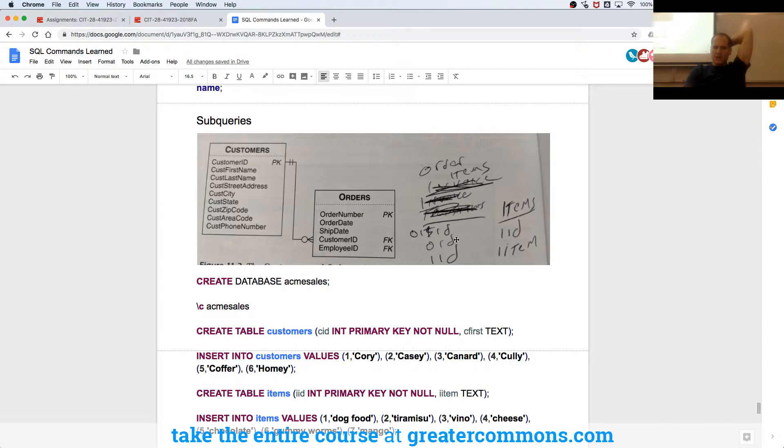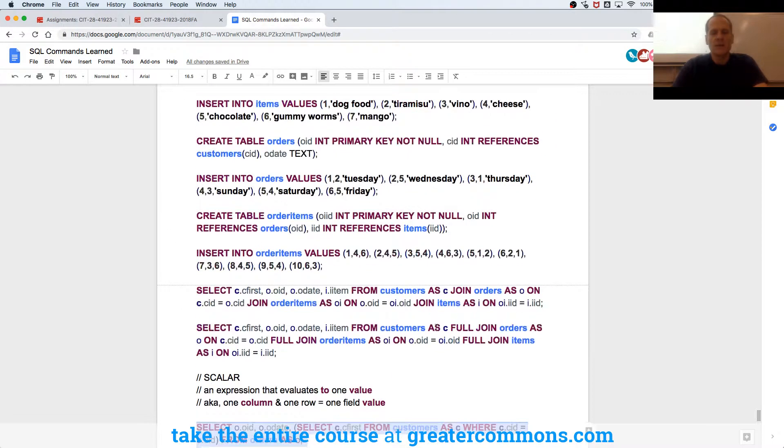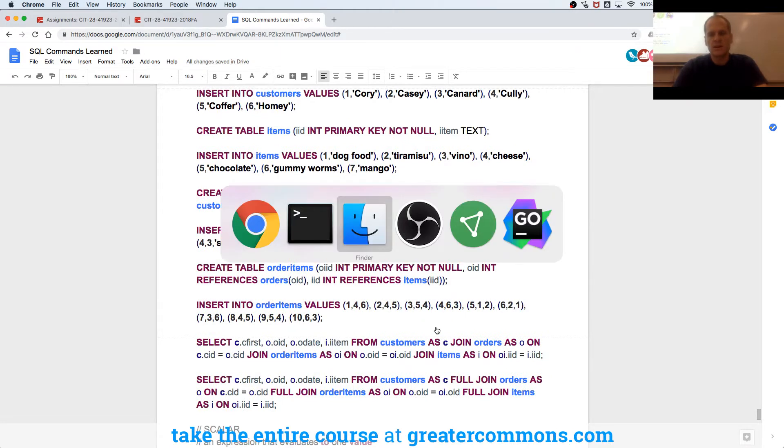So one order can have many order items, and then we just connect the items. So one item can be associated with many orders. That's a better way to say it. One item can be associated with many order details. So that's how you'd read it back. So we got our tables, and let me see how long this one is.